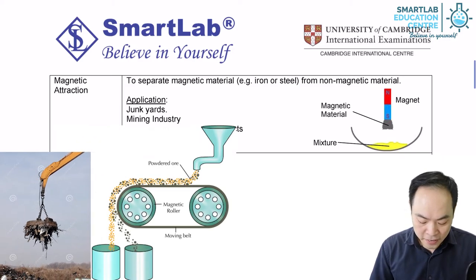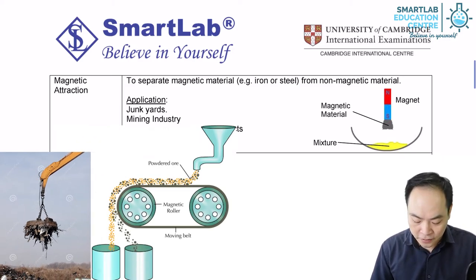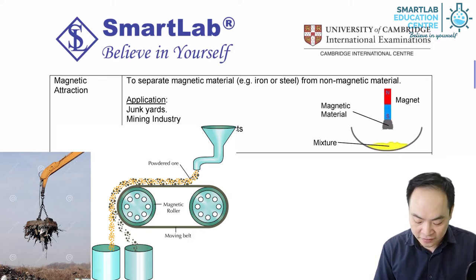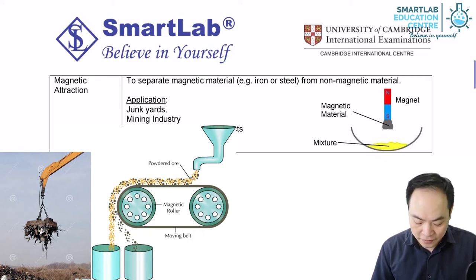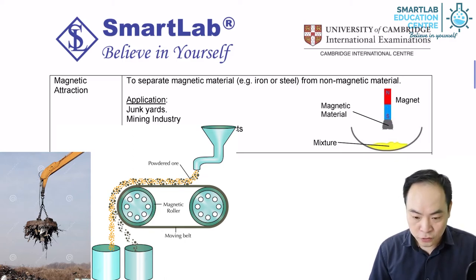In mining, a magnet is used to separate unwanted metals from the production line. These separated metals can be impurities that may enter into the finer products.